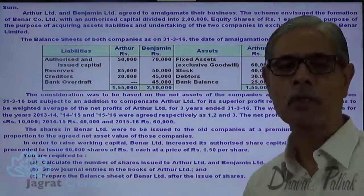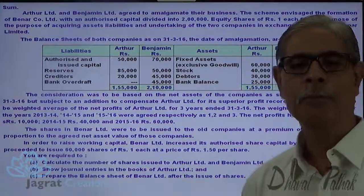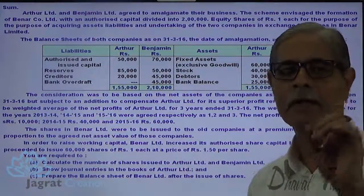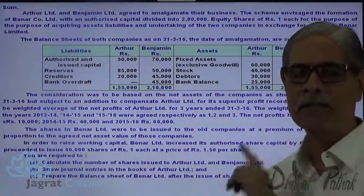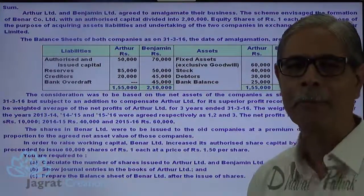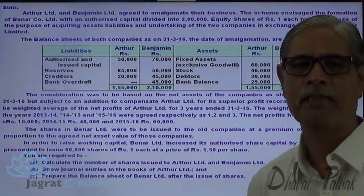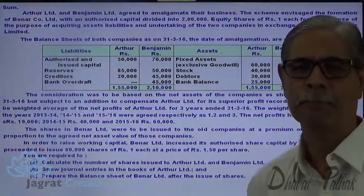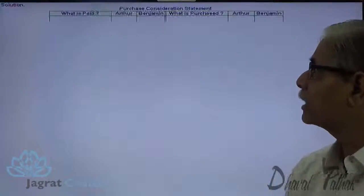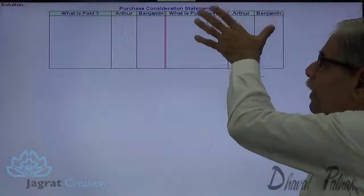Now for the purpose of solving the sum, first I will find out the purchase price of Arthur Ltd. and Benjamin Ltd., which is required to be paid by Banner Ltd. on acquisition of business. I will prepare a purchase consideration statement showing what is paid and what is purchased — that is, net assets acquired by Banner Ltd.